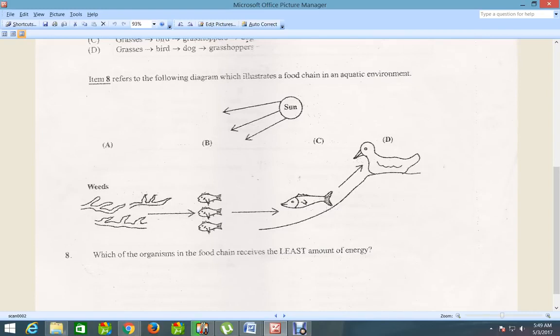Which of the organisms in the food chain receives the least amount of energy? So we have the food chain starting in this direction. We have the weeds, fish of course there. Now as for which food chain, it would have to be D here. So D is the correct answer because as I go along a food chain, the amount of food that is available or energy normally gets less.